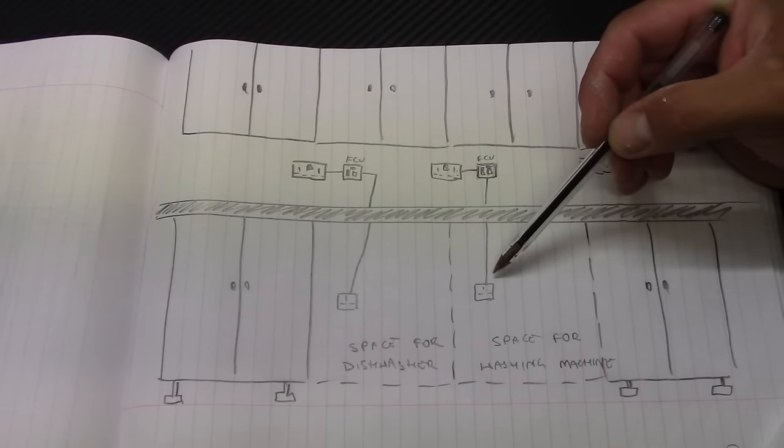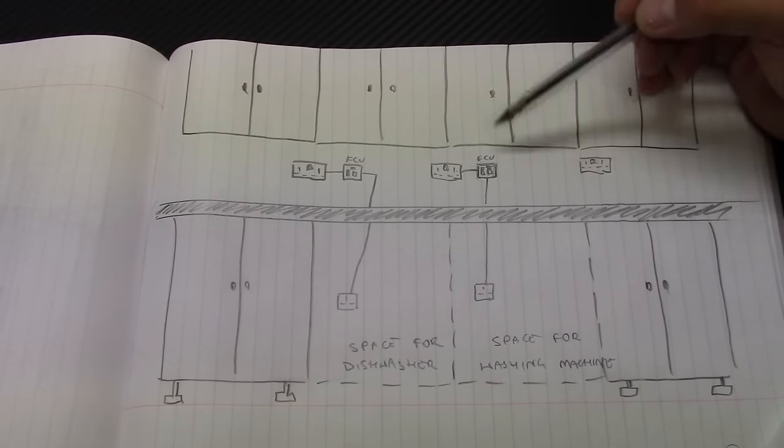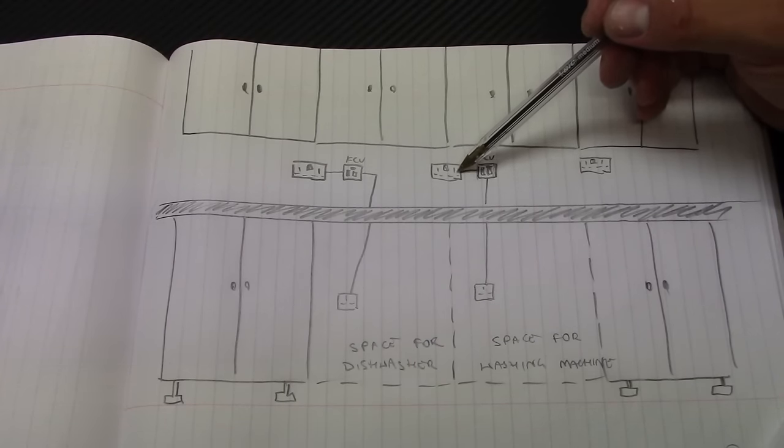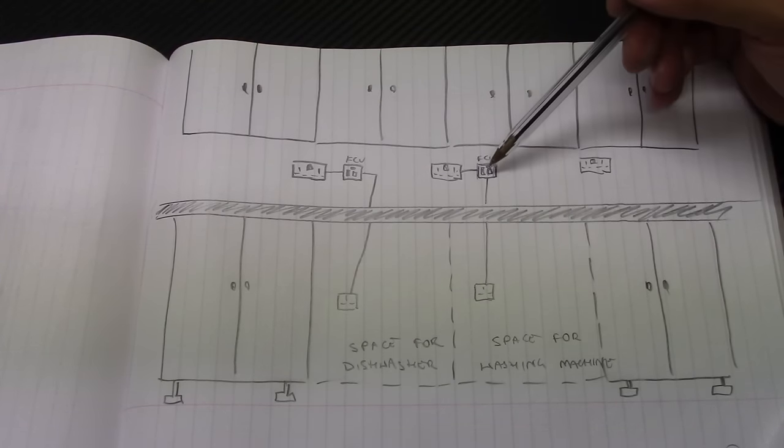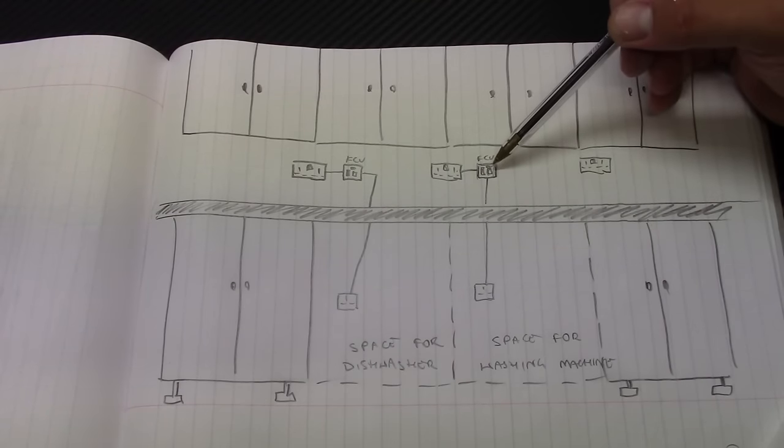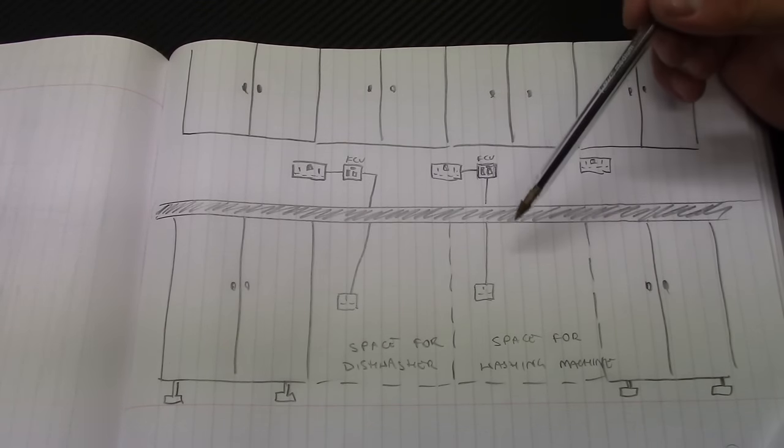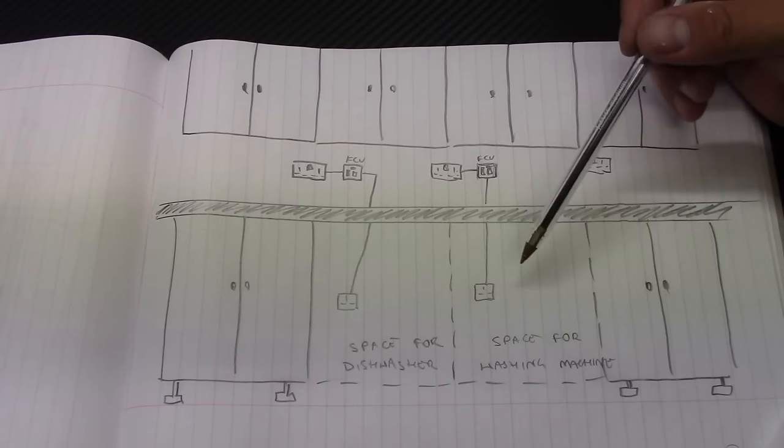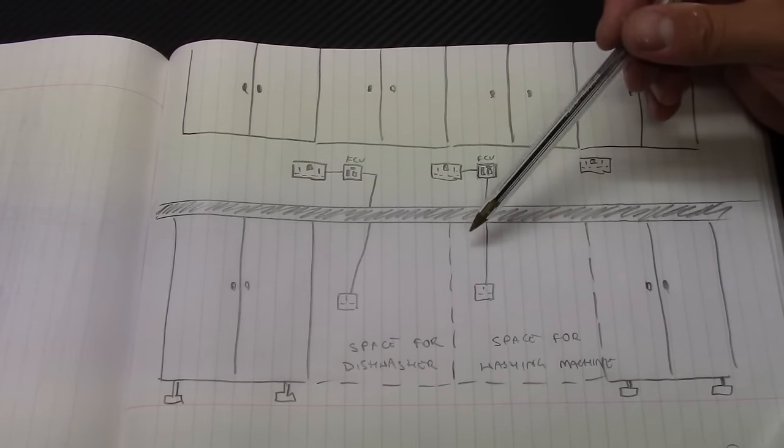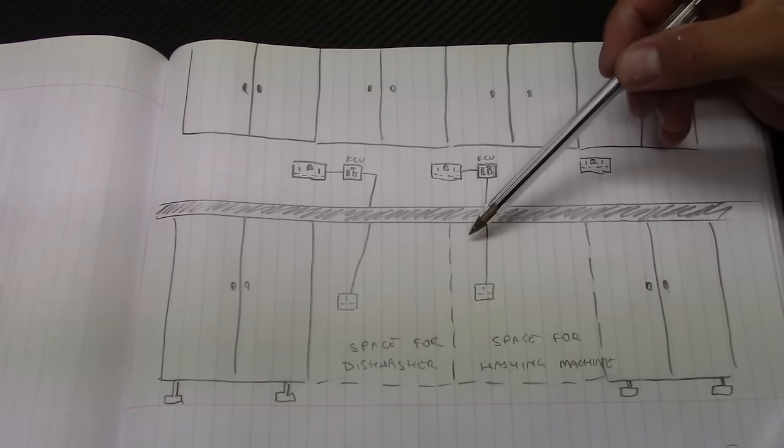But I suggest and recommend to use the FCU. Between the socket on the ring and the single socket you just install FCU and it works as a switch. It's very convenient especially if you go away for example for a long period of time for holidays.